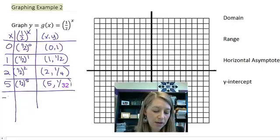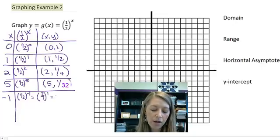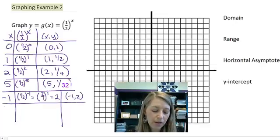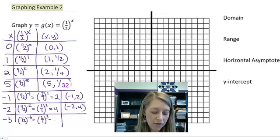Let me pick some negative values. If I pick negative 1, I get 1 half to the negative 1. Negative exponents means you flip your fraction. So that's the same thing as 2 over 1 to the positive first power, which is 2. So my ordered pair is negative 1, 2. If I plug negative 2 in there, I get 1 half to the negative 2, or 2 over 1 to the positive 2, or 4. So it gives me negative 2, 4. If I plug negative 3 in there, same philosophy, gives me 2 over 1 to the positive third, or 8, or negative 3, 8.